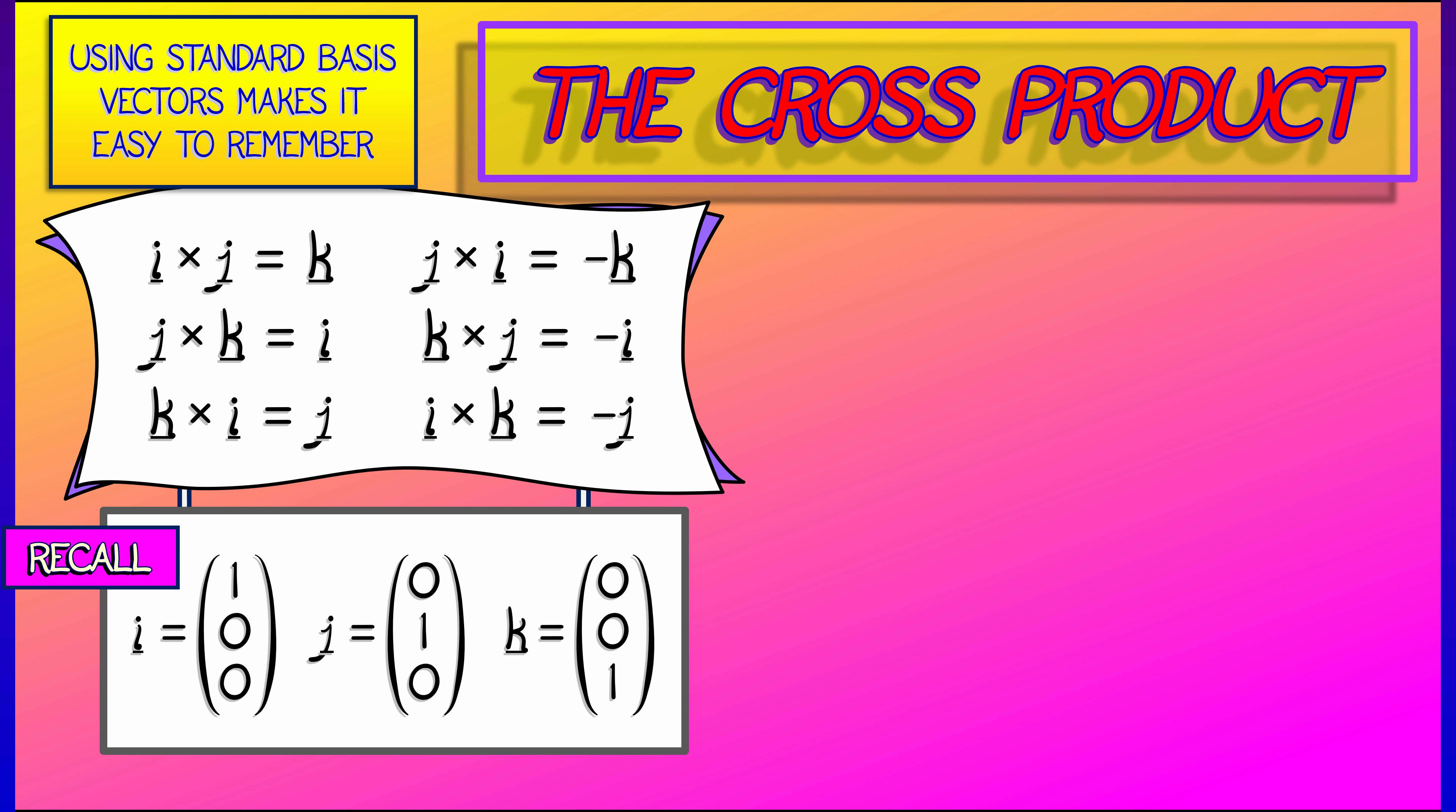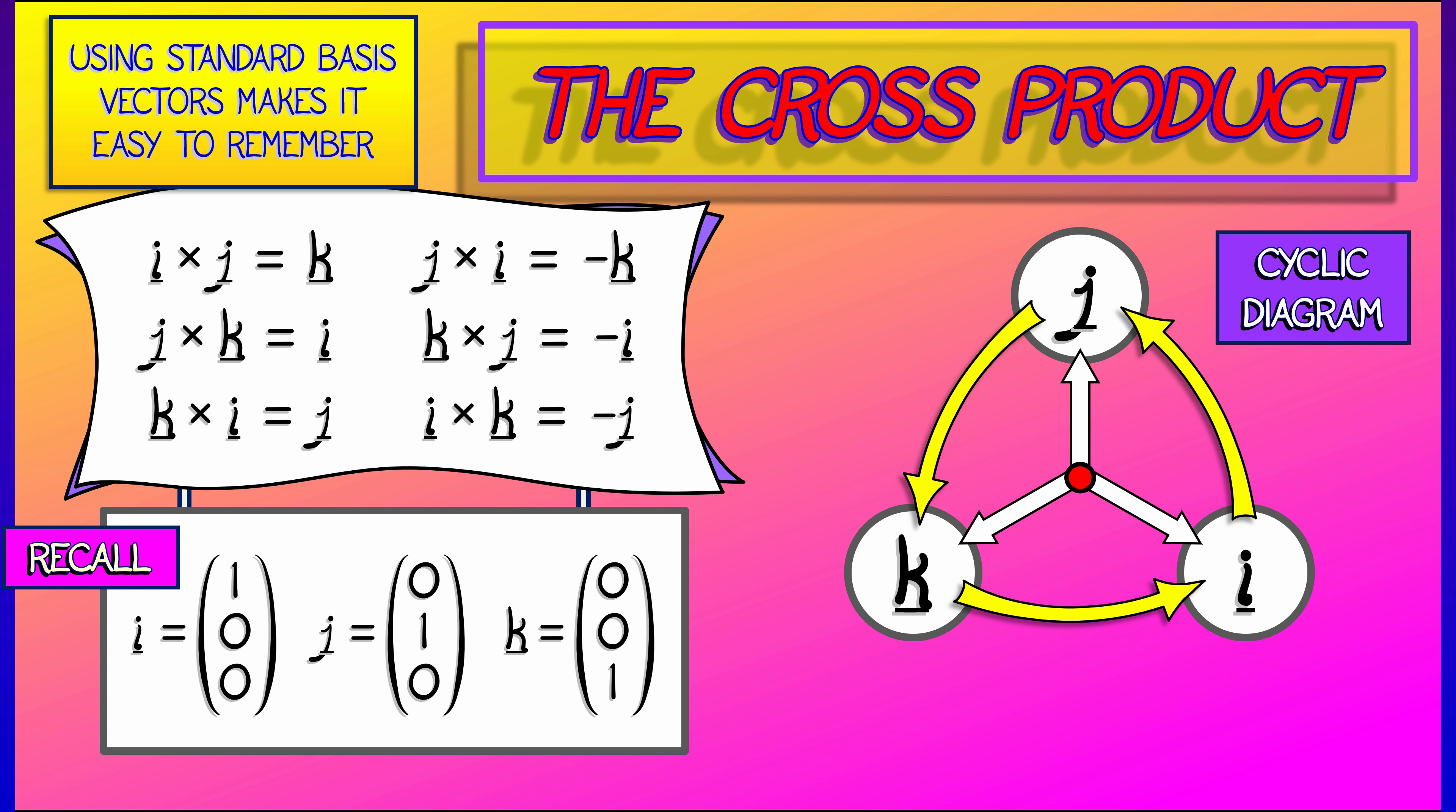These have some very nice properties with respect to the cross-product. For example, i cross j is k, and j cross i by anti-commutativity must be equal to minus k, and j cross k is i, and k cross j is blah, blah, blah, whatever.